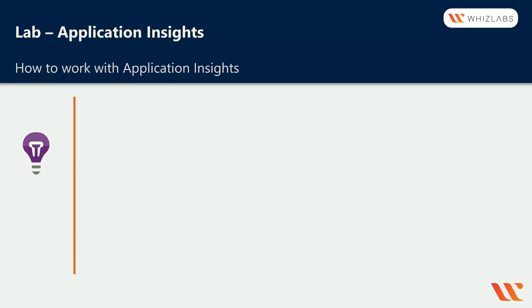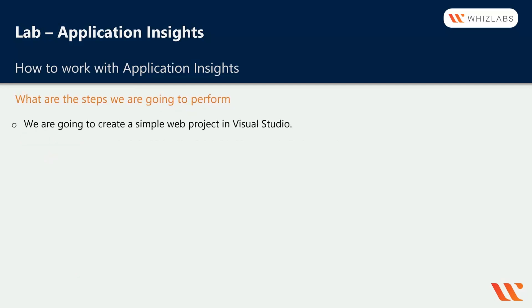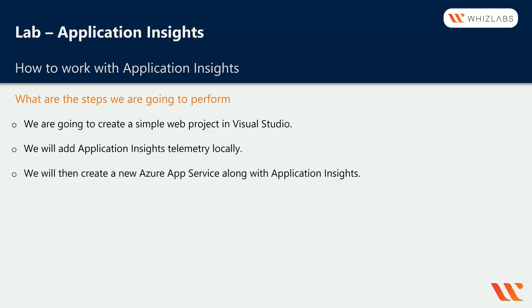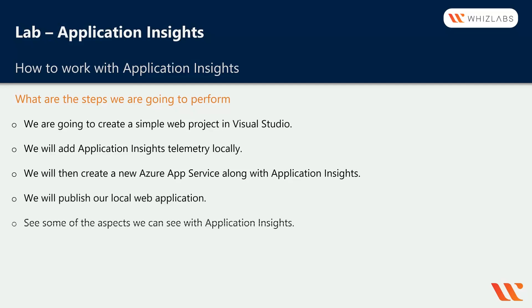In this chapter, let's see how we can work with Application Insights. In our lab, we are going to create a simple web project in Visual Studio, add the Application Insights telemetry locally, create a new Azure App Service along with Application Insights, publish our local web application, and see some of the aspects you can observe with Application Insights.